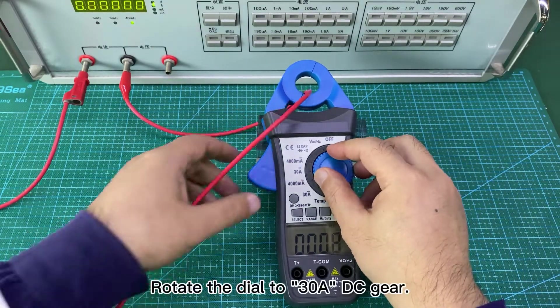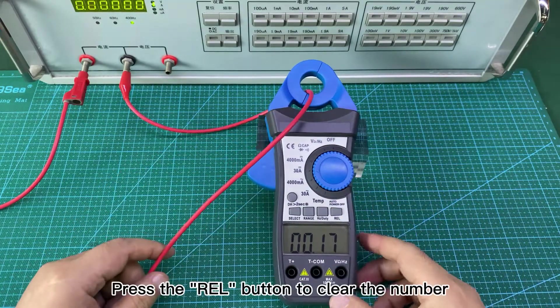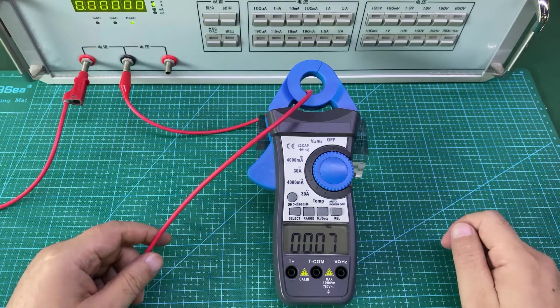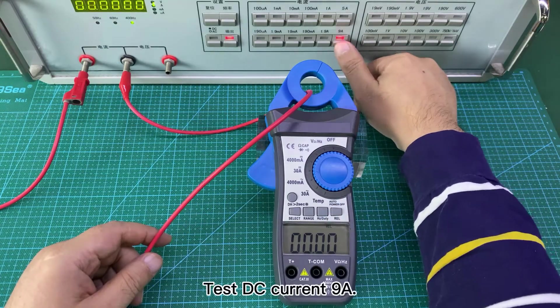Rotate the dial to 30A DC gear. Press the REL button to clear the number. Test DC current 9A.